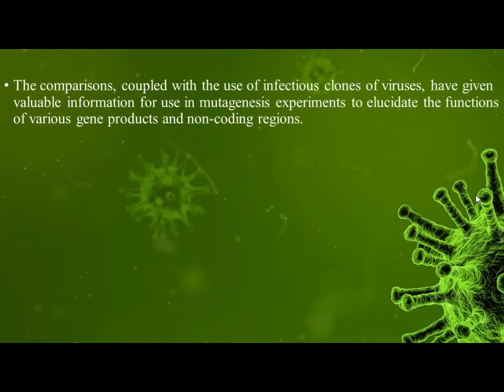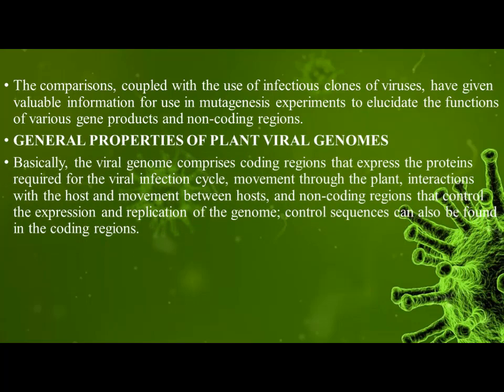The comparisons, coupled with the use of infectious clones of viruses, have given valuable information for use in mutagenesis experiments to elucidate the functions of various gene products and non-coding regions. The viral genome comprises coding regions that express the proteins required for the viral infection cycle, movement through the plant, interactions with the host, and movement between hosts, as well as non-coding regions that control the expression and replication of the genome.